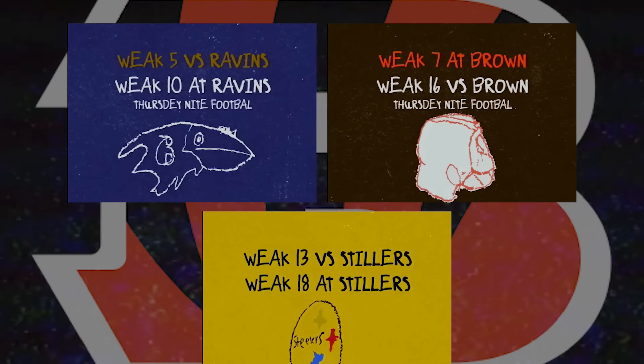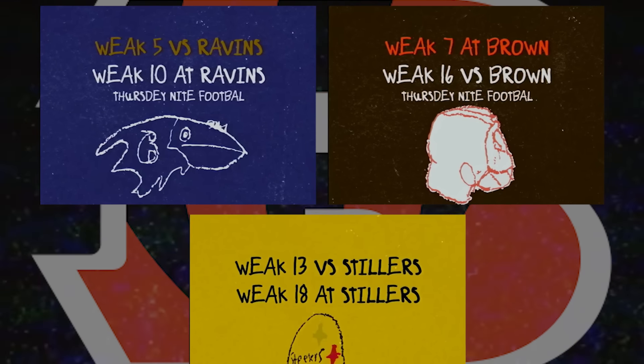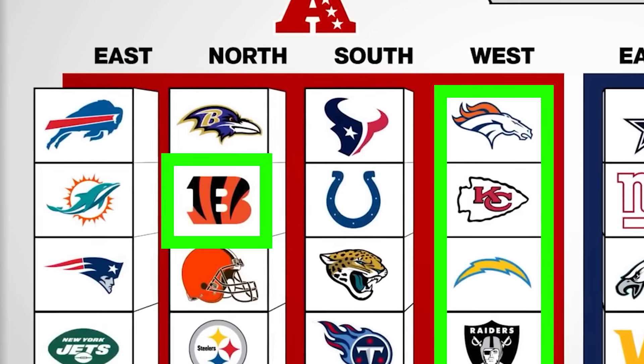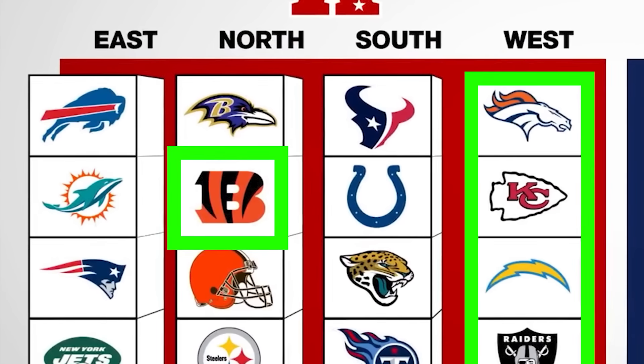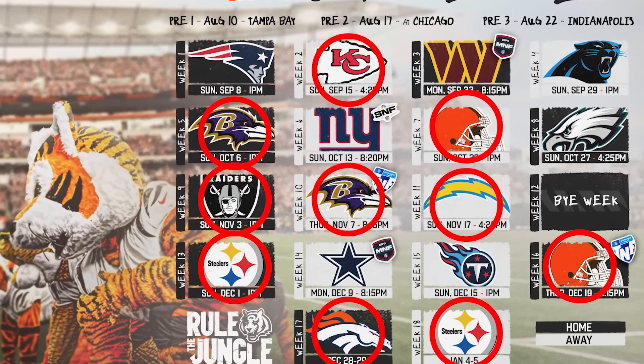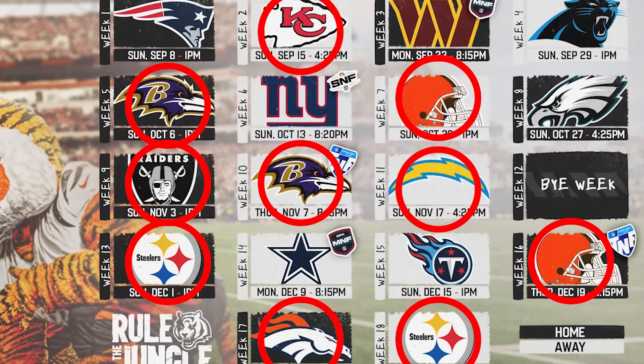The basic rules are as follows: each team plays every team in their division twice throughout the year — one time at home, one time on the road. That's six of your 17 games right off the bat. Each team also plays every team from a different division within the same conference. For example, this year the AFC North plays the AFC West — two of those games at home, two on the road — putting you at 10 games.